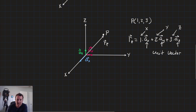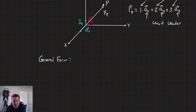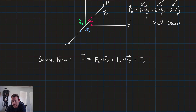From that we get a general form of our vectors — this is the one we'll hang on to. The vector f is equal to f_x times the unit vector a_x, plus f_y times the unit vector a_y, plus f_z times the unit vector a_z.